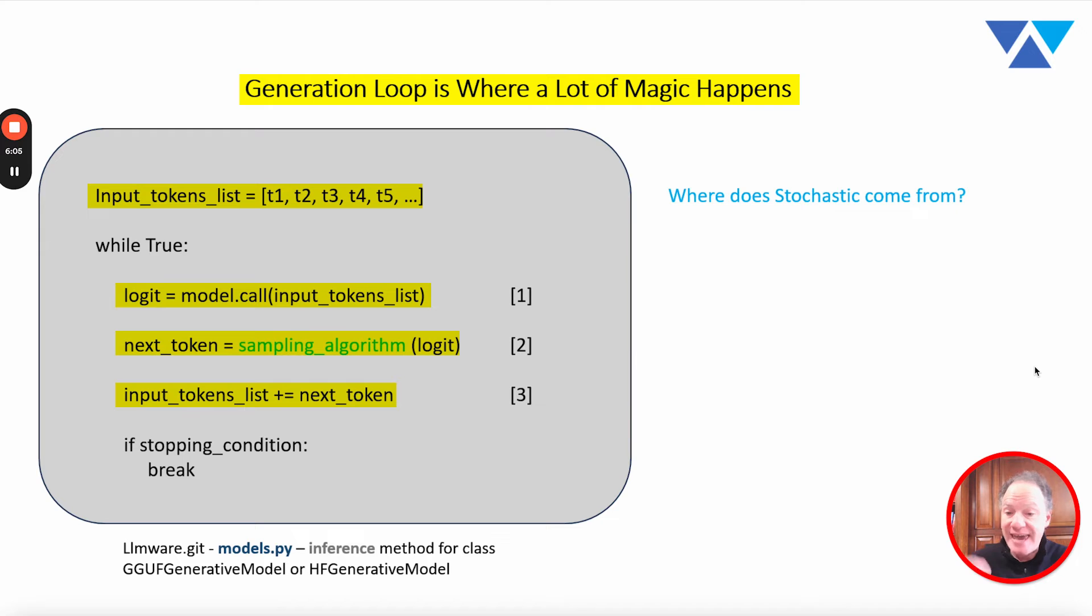Now, step three, then, is you actually take that next token, you add it to the input tokens list. So actually outside of the model, we're selecting that next token and then adding to that context and then repeating. So we take the context, let's say it was five tokens, we've now made it six tokens. That six token context, then, we pass back into the model.